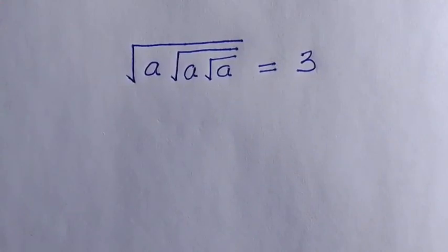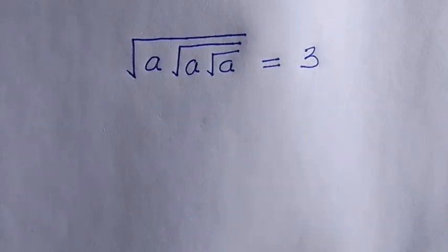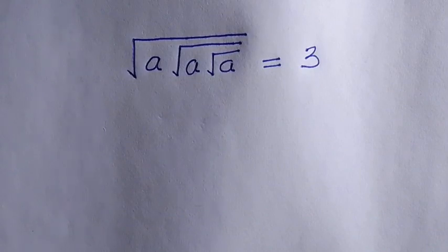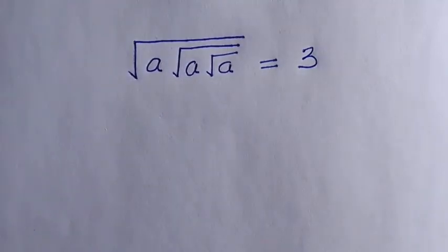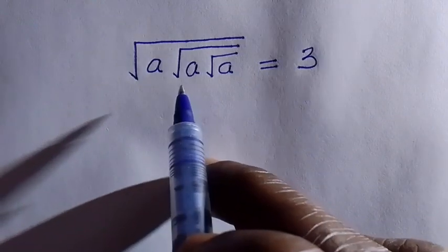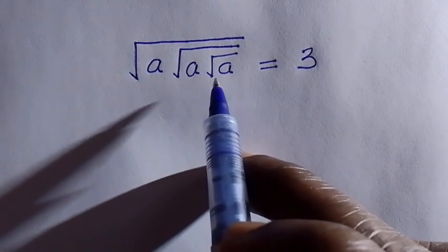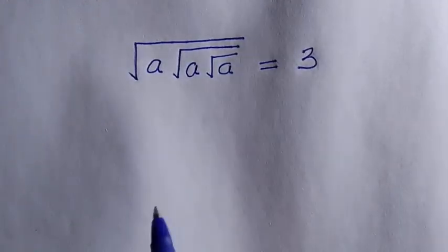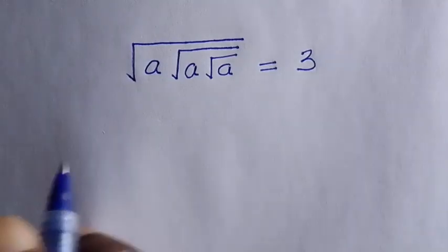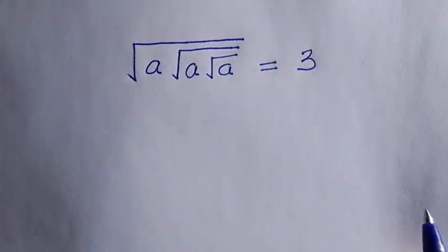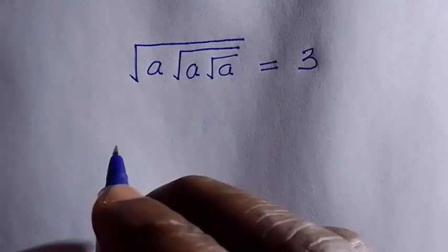Good day viewers, you are welcome. How to solve these nice, interesting nested radical equations, where we have square root of a inside square root of a inside square root of a equals 3. And to find the value of a that satisfies this, we are going to apply two different methods.